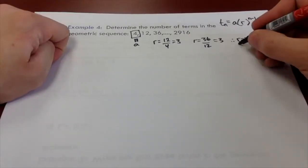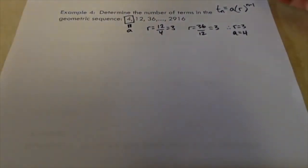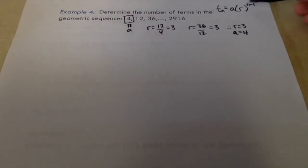So we've got r is 3. We've got a is 4. So we want to solve for n here. What we need is we need to sub in tn. So we need to know what tn is. Remember tn, that's going to be the term that we get when we sub in the number of terms.